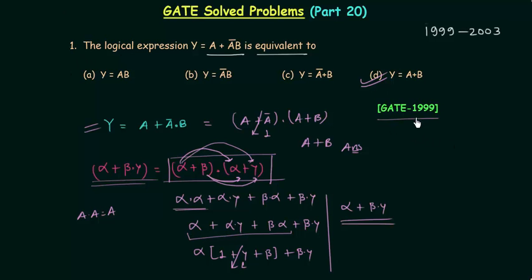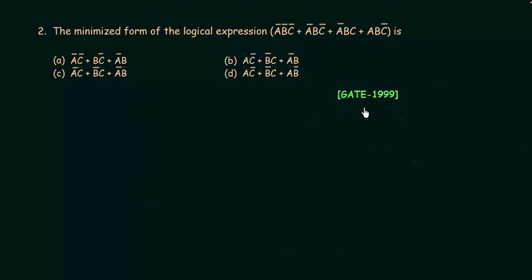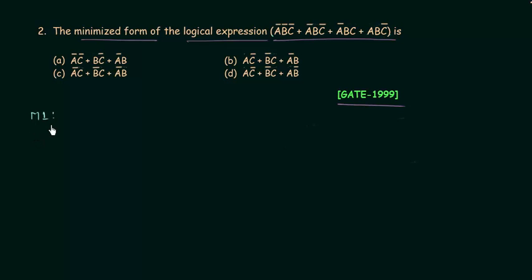This first problem is from the GATE 1999 paper. The second problem is also from GATE 1999. We have to find the minimized form of the given logical expression. There are two ways to solve this: the first method uses Boolean Algebra, and the second method uses a Karnaugh Map.